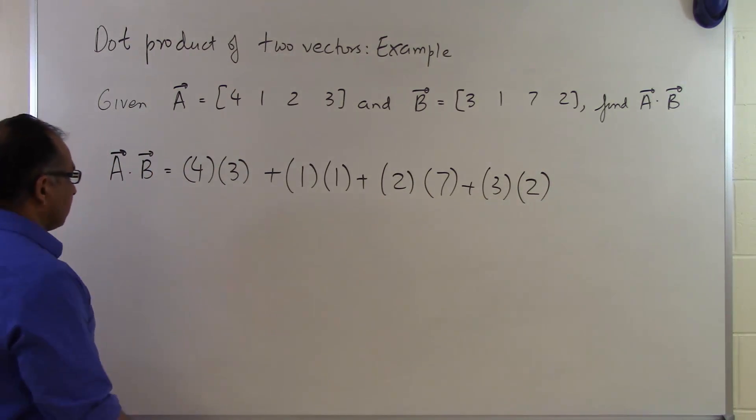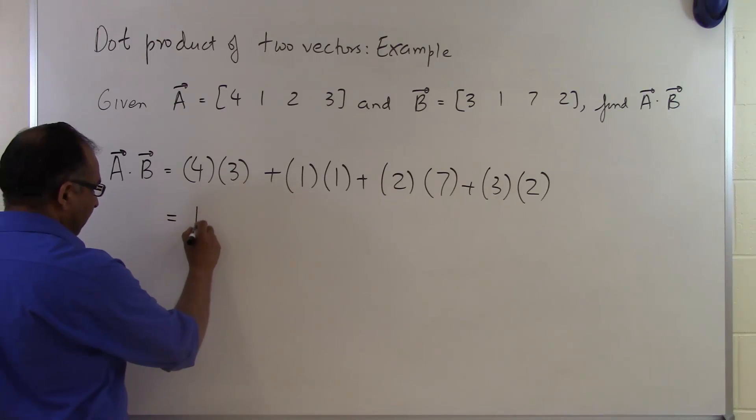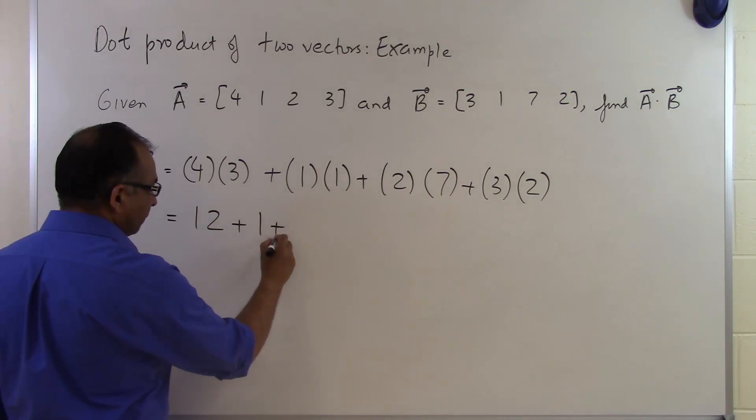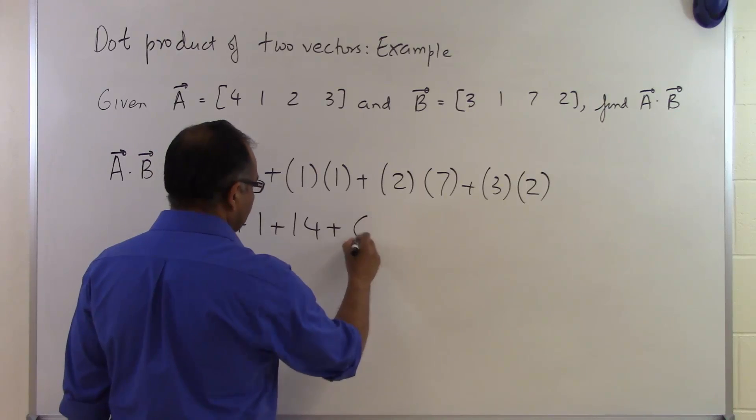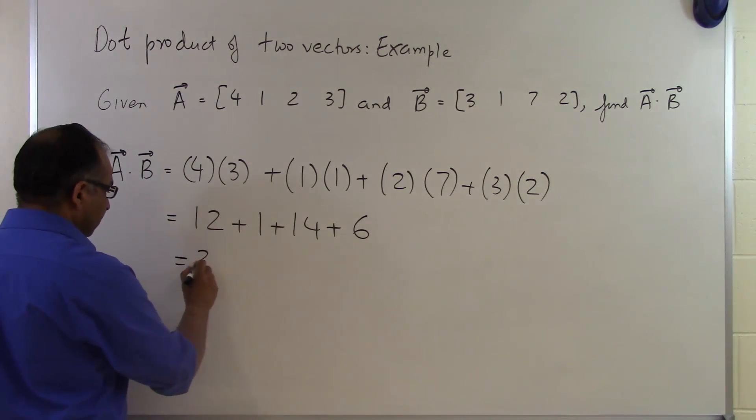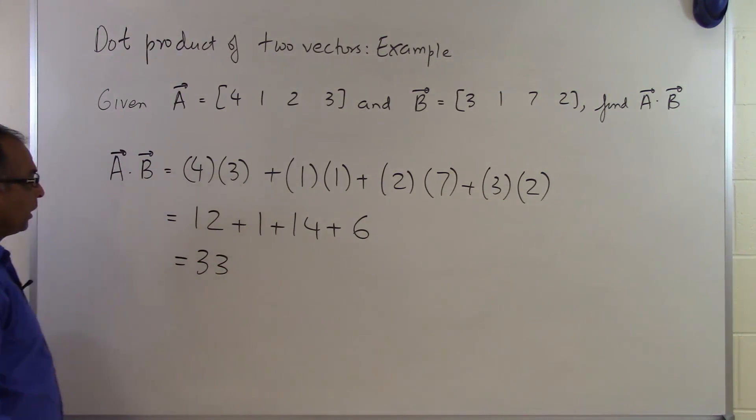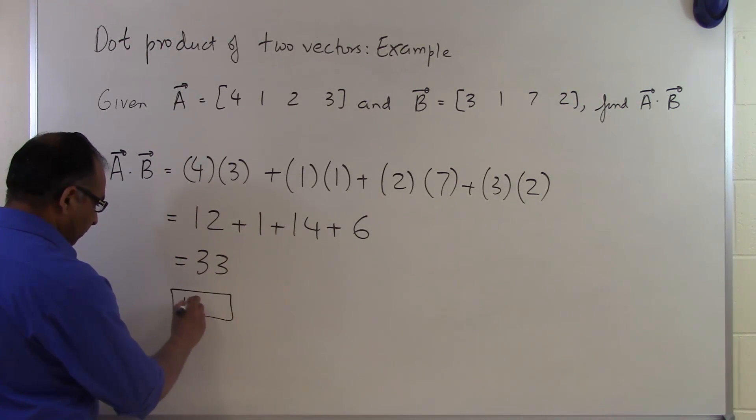So we just multiply each of those correspondingly and then add them up. I get 12 from here, I get 1 from here, I get 14 from here and I get 6 from here and that is 33. So the dot product of the two vectors A and B in this case is 33 and that's the end of this segment.